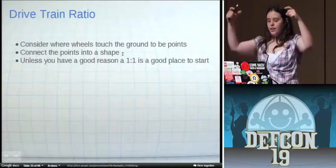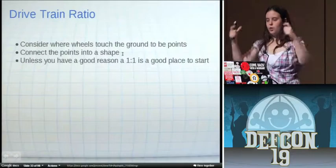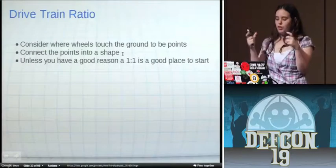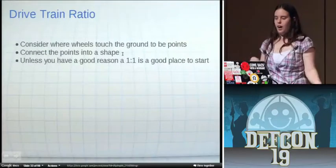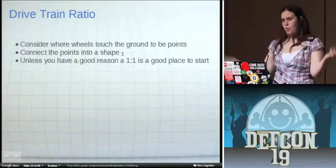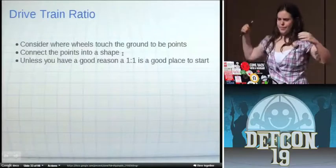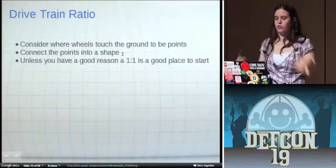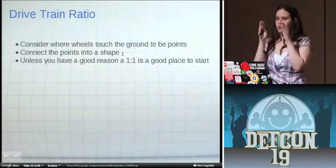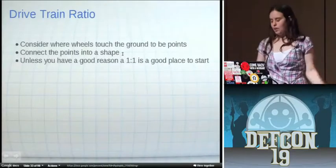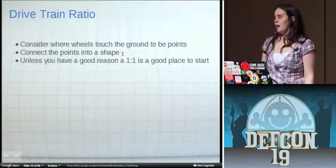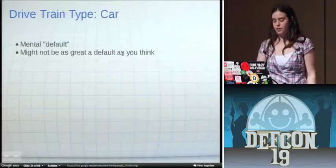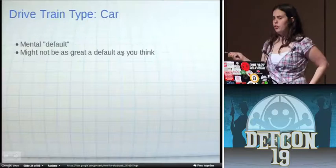Next item, drive train ratio. We're going to consider the places where the wheels are. We're going to assume the four wheeled robot here because we're simple. Assume that the points where the wheels touch the ground, you make them into a shape. If it's a square, then you can go forward and turn. If you want it to be super agile, you have the big crazy angle thing, or you drive the rectangle with the short side forward. If you just want it to go straight almost all the time. This is not terribly complicated, but a lot of people are just like, I'm making a robot. I'm going to put some wheels on some plywood.